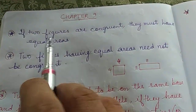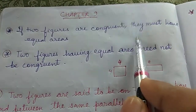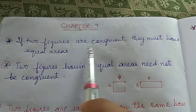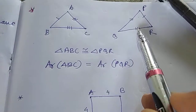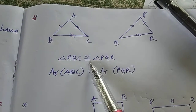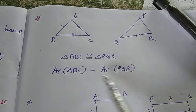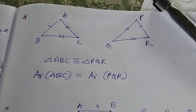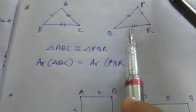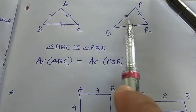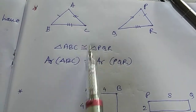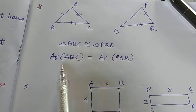The first point is: if two figures are congruent, they must have equal areas. For example, these two triangles are congruent, so their areas will be equal. This applies to two squares, two rectangles, or any two polygons — if they are congruent, the areas will be the same.